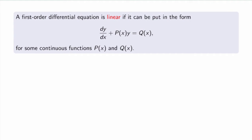Let me first define what a linear differential equation is. A first-order differential equation is linear if it can be put in the form dy/dx plus p(x) times y equals q(x), where p(x) and q(x) are two arbitrary functions that are continuous over some interval. The key is not the dependence on x but the dependence on y — y appears only in two terms: dy/dx and a function of x times y. So the second term is linear in y, which is why the equation is called a linear differential equation.